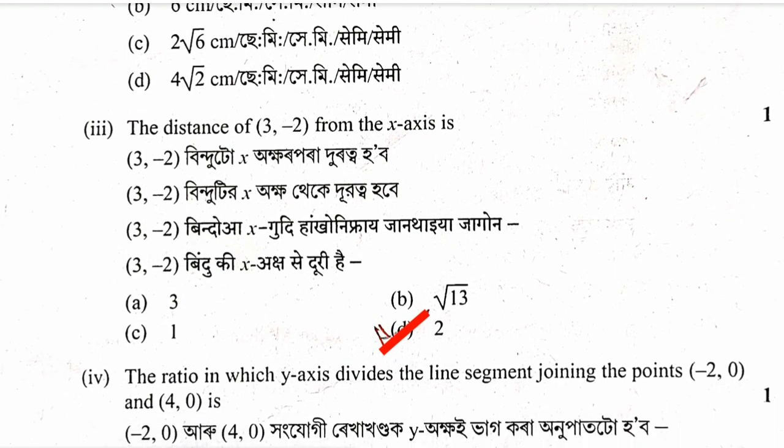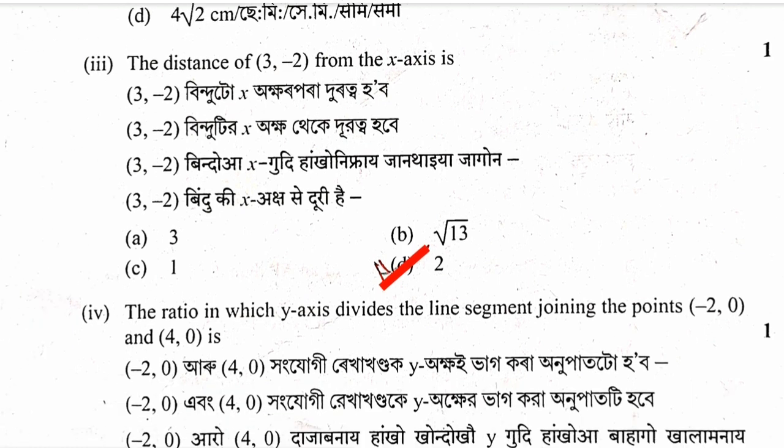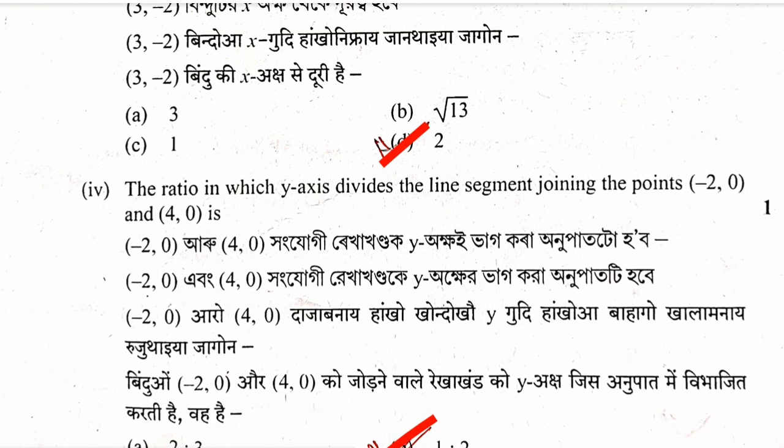Question 4: The distance of the point (3, minus 2) from the x-axis. The distance from the x-axis is the absolute value of the y-coordinate, which is 2 units. Option D is correct.